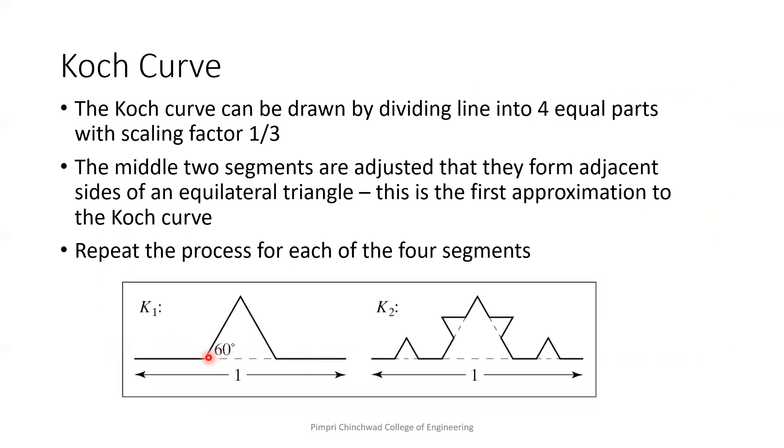Then we pick up the middle part. We replace this section, this segment, by two segments. So we will assume we are having one triangle over here, equilateral triangle. So we will add two more sides of this triangle having this one-third size of the original line. So I got a shape like this.